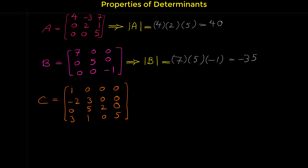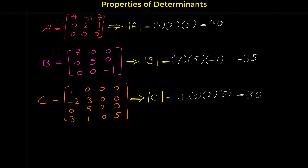And the last row is 3, 1, 0, 0. The determinant of matrix C is 1 times 3 times 2 times 5: 1 times 3 is 3, 3 times 2 is 6, 6 times 5 is 30. This is how you can find the determinant of upper triangular, lower triangular, or diagonal matrices — simply multiply the elements of the main diagonal.